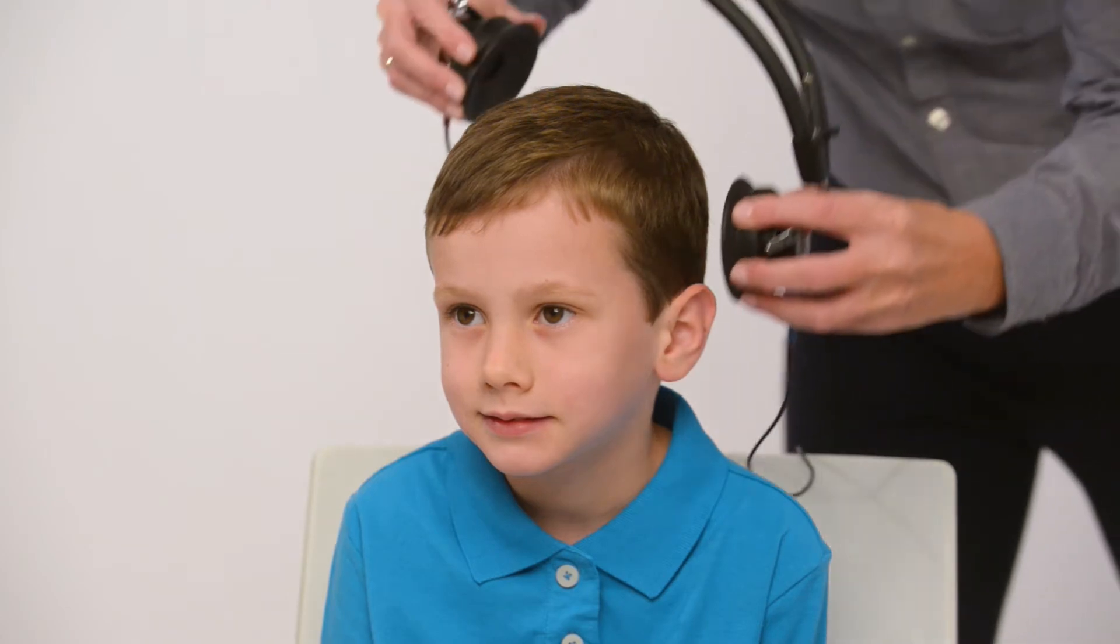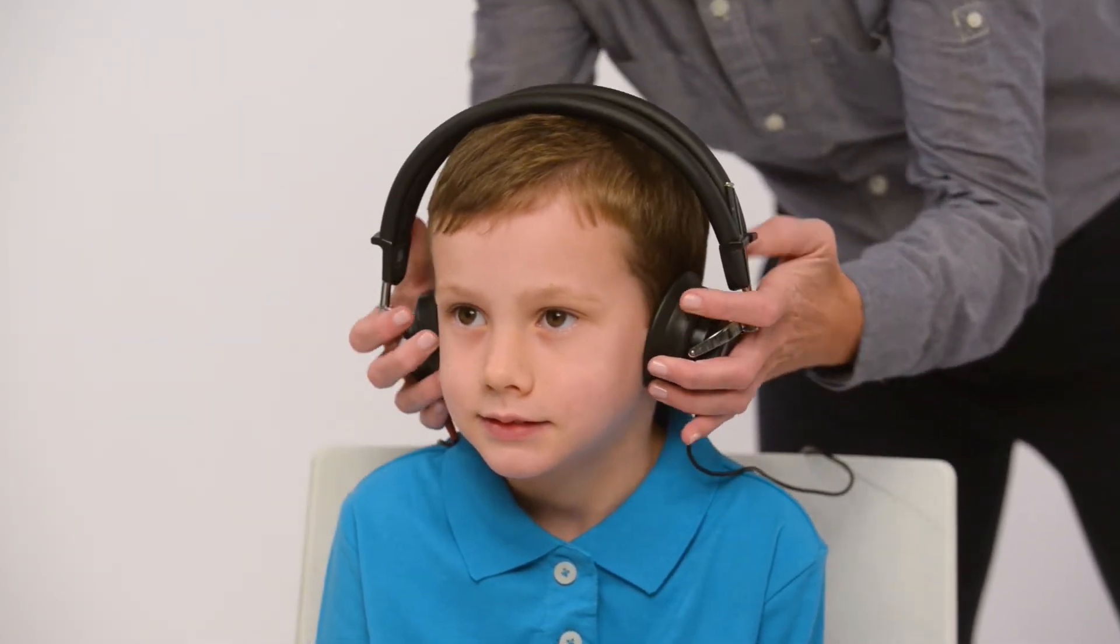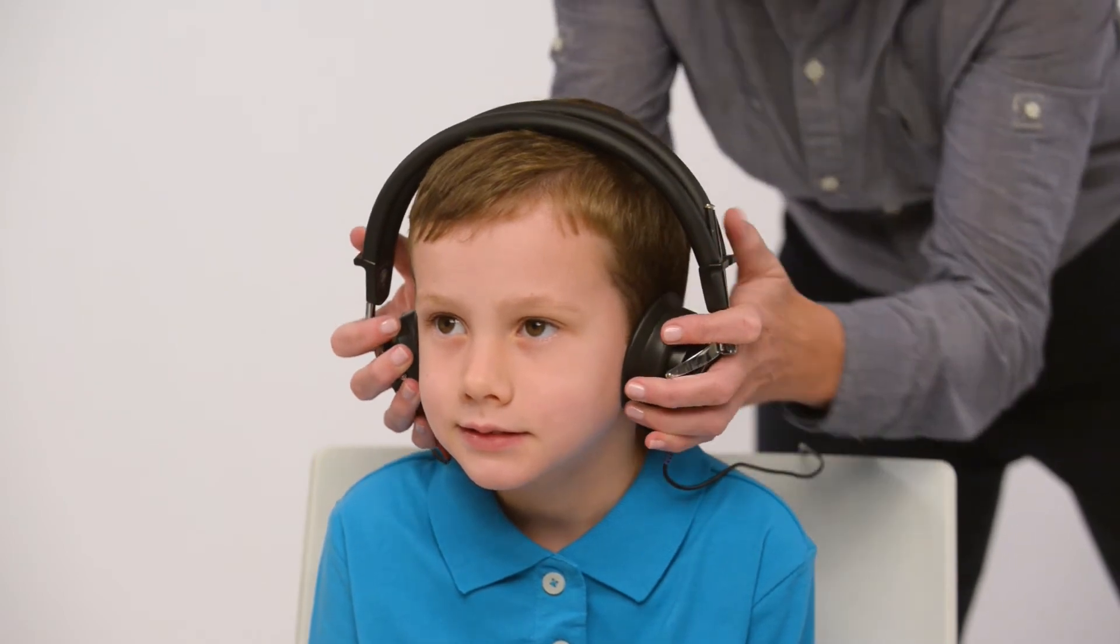Place headphones directly over the child's ear, with red phone on the right ear, blue on the left. Remove any obstructions that may interfere or be uncomfortable such as glasses. Adjust the headband so the headphones are centered over the ear canal.